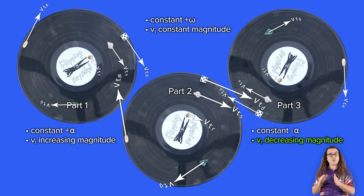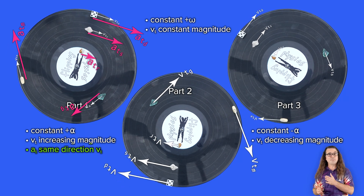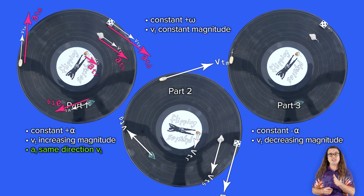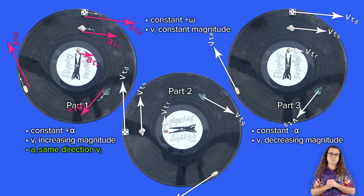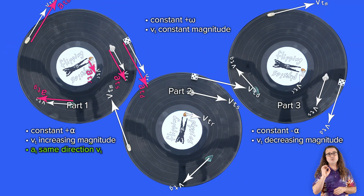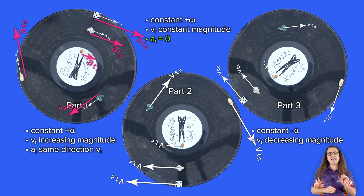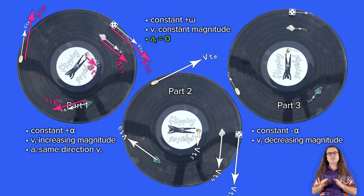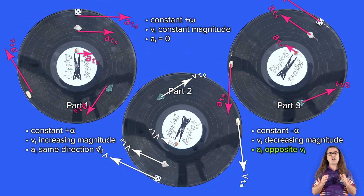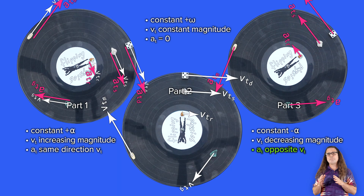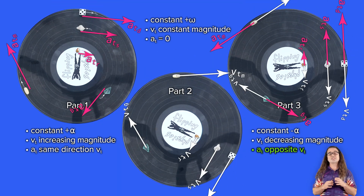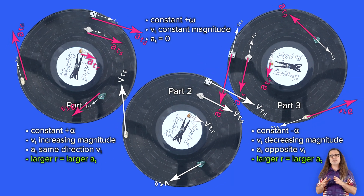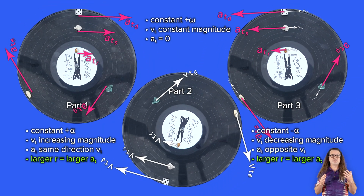During part one, the tangential accelerations — shown in pink — are in the same directions as the tangential velocities because the magnitudes of the tangential velocities are increasing. During part two, the tangential accelerations are all zero because the magnitudes of the tangential velocities are all constant. During part three, the tangential accelerations are opposite the directions of the tangential velocities because the magnitudes of the tangential velocities are decreasing. Also notice that the larger the radius of the object, the larger the tangential acceleration of the object.